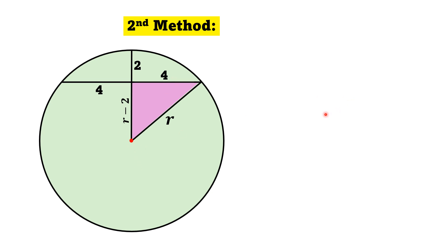Using the famous Pythagorean theorem on this right triangle, we will get R square is equal to R minus 2 square plus 4 square.